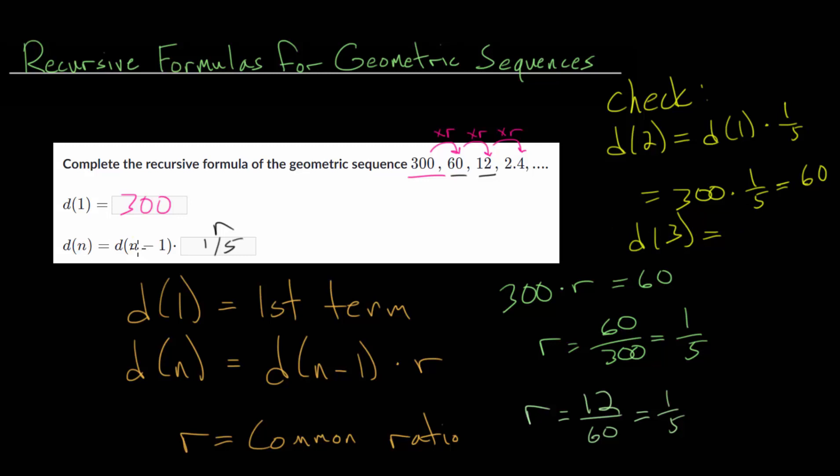So the third term, now n is 3. So this is d(3 minus 1), which is d(2), the second term, multiplied by one-fifth. And we get 60 multiplied by one-fifth, or divided by five, which is 12. So when we checked it for our second and third terms, we got back values that made sense, that were actually part of our sequence. So that way, we can feel confident that the values we put in the boxes are correct.